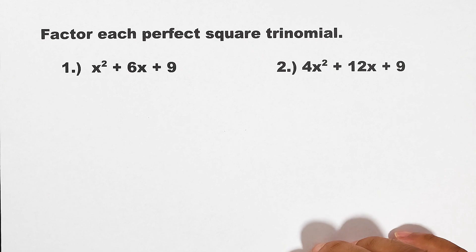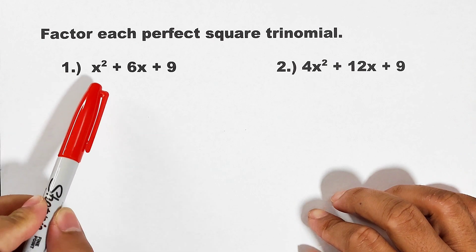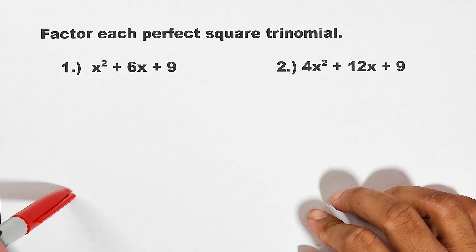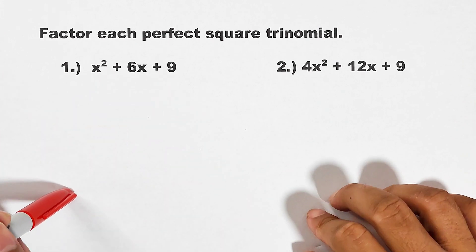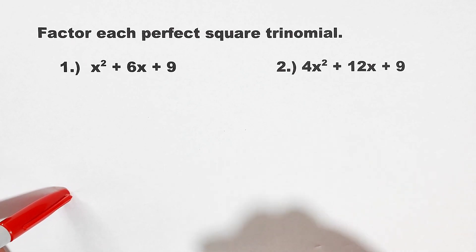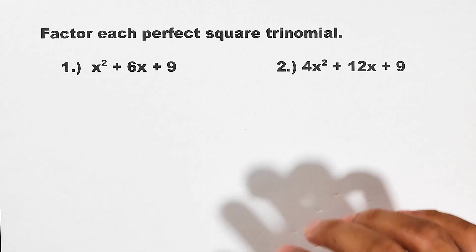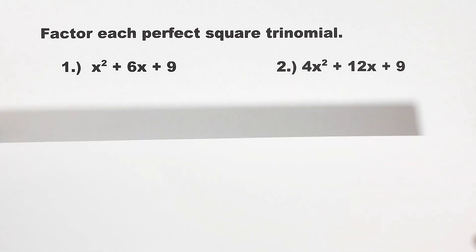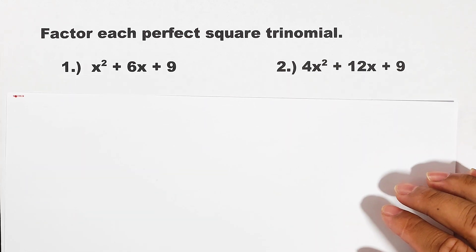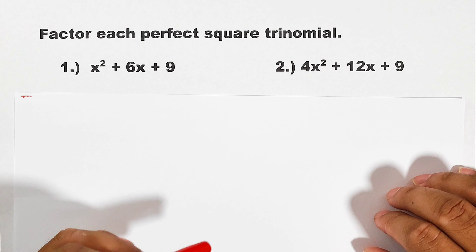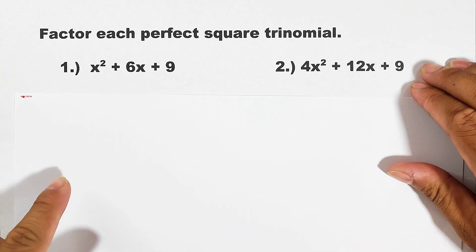These expressions are called perfect square trinomials because they have three terms. At the same time, this one can be expressed as the square of a binomial. By the way, before we start, let me give you a brief context on the pattern in squaring or in factoring a perfect square trinomial.